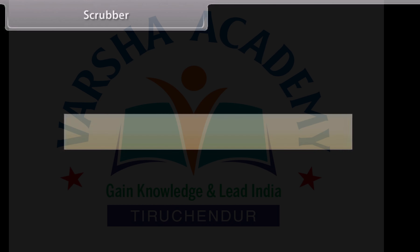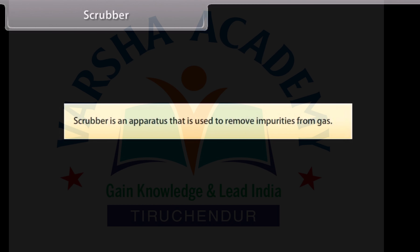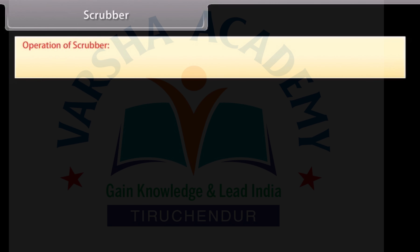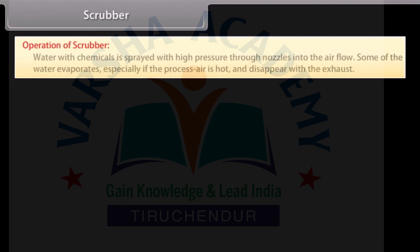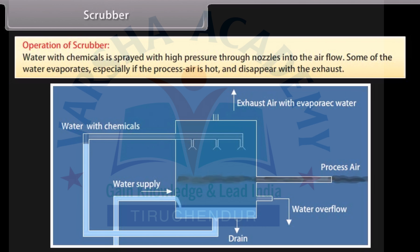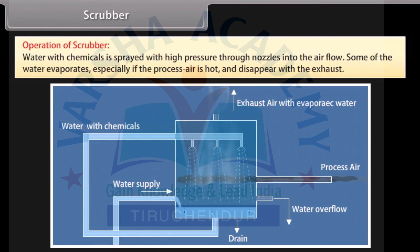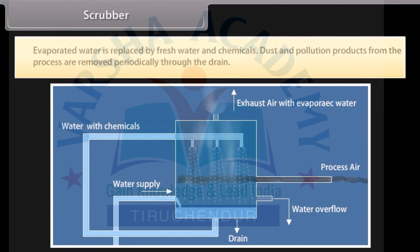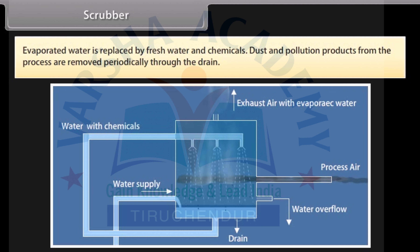A scrubber is an apparatus used to remove impurities from gas. Water with chemicals is sprayed at high pressure through nozzles into the airflow. Some of the water evaporates, especially if the process air is hot, and disappears with the exhaust. Evaporated water is replaced by fresh water and chemicals. Dust and pollution products are removed periodically through the drain.